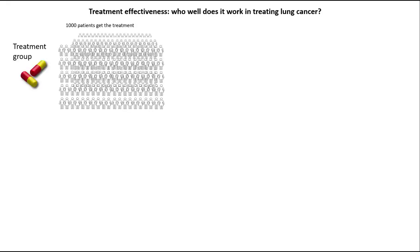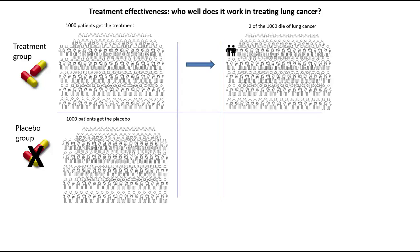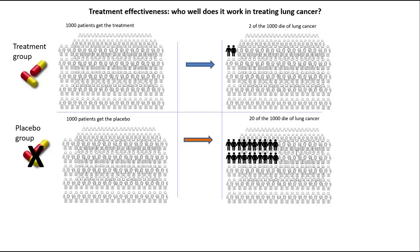Let's consider a hypothetical example. Imagine there's a new treatment for lung cancer, and in a controlled trial of 2,000 lung cancer patients, 1,000 get the treatment and 1,000 get a placebo. After 6 months, we look at the number who die from lung cancer. In the treatment group, 2 out of 1,000 die. In the placebo group, 20 out of 1,000 die.